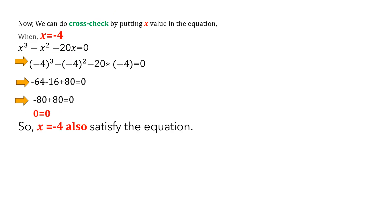Now let's check for x equals minus 4. Substituting, we get (minus 4) cubed minus (minus 4) squared minus 20 times (minus 4), which is minus 64 minus 16 plus 80. Minus 64 minus 16 equals minus 80, and minus 80 plus 80 equals 0. Left-hand side equals right-hand side, so x equals minus 4 also satisfies the equation.